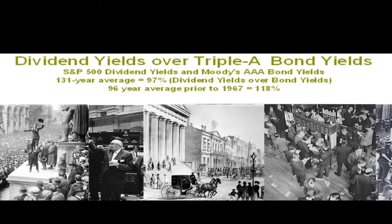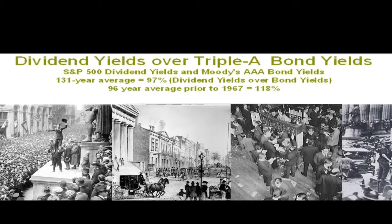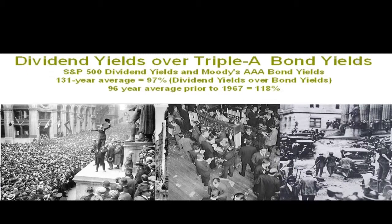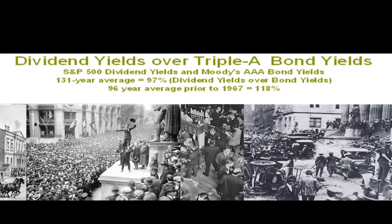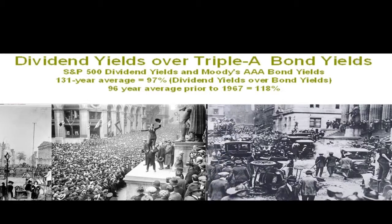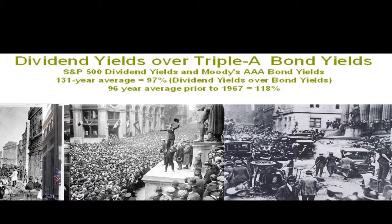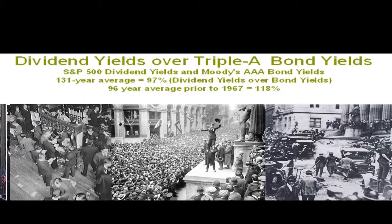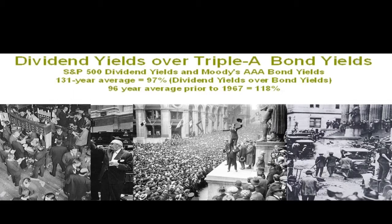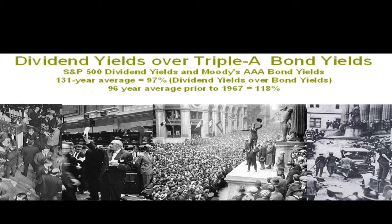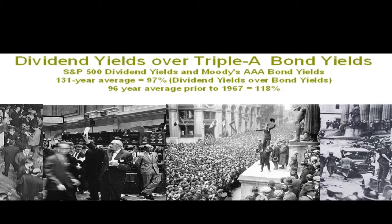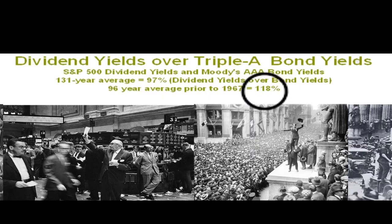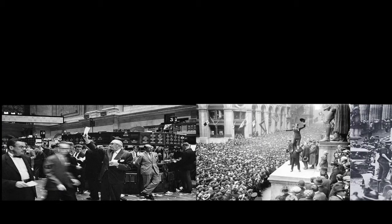However, this began to change in the 1950s. Before the 1950s, less than 5% of Americans invested in stocks. Most investors were businessmen who made their own decisions and managed their own portfolios. They were smart enough to know that stocks were riskier than bonds. Today, most investors trust their wealth to mutual fund managers whom they have never met. Most people no longer select their own stocks; they trust their retirement money to strangers. Before 1967, the average dividend yield on Standard & Poor's 500 stocks was 118 percent of the average yield on AAA bonds. In the 21st century, this is no longer the case.